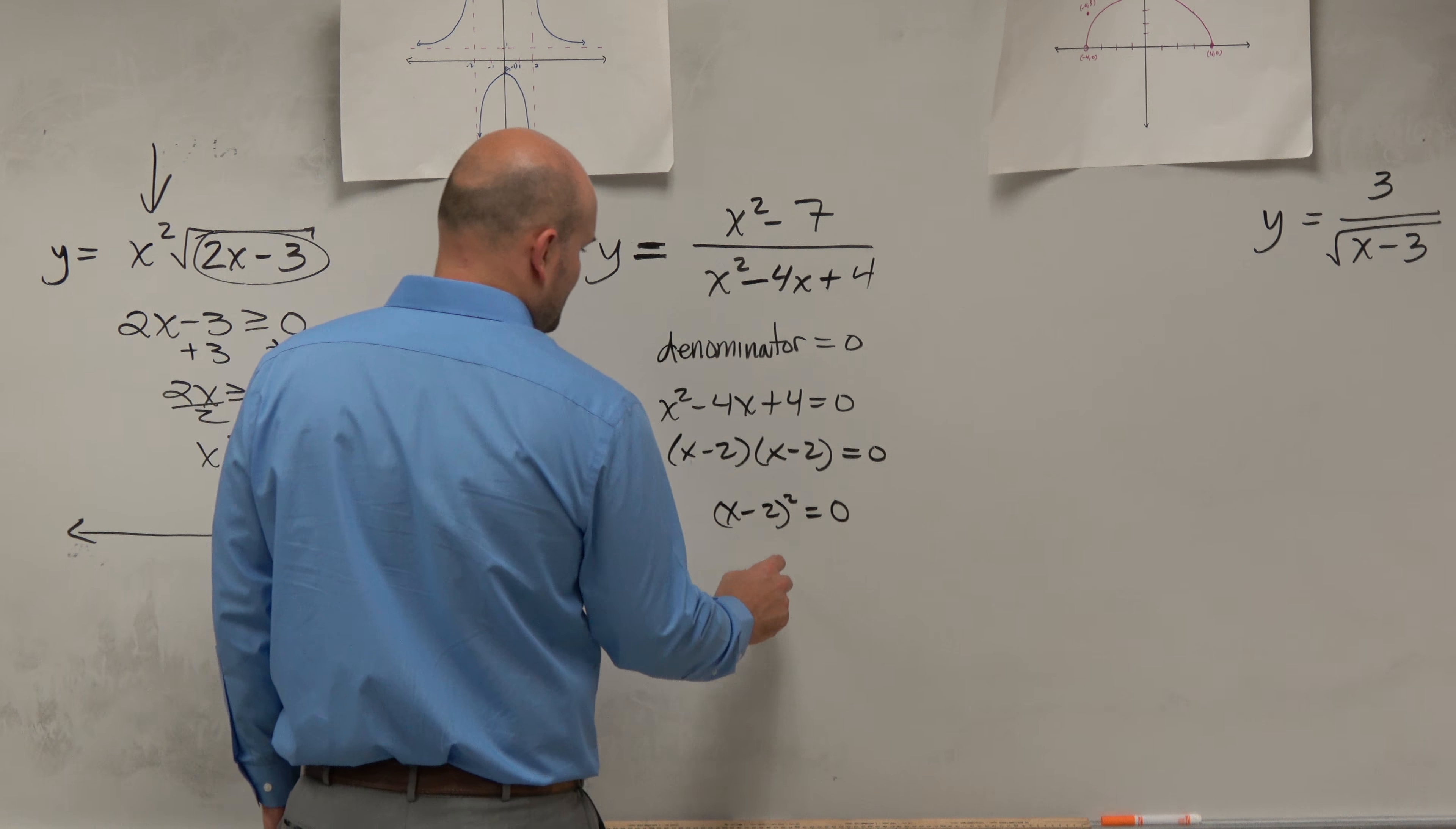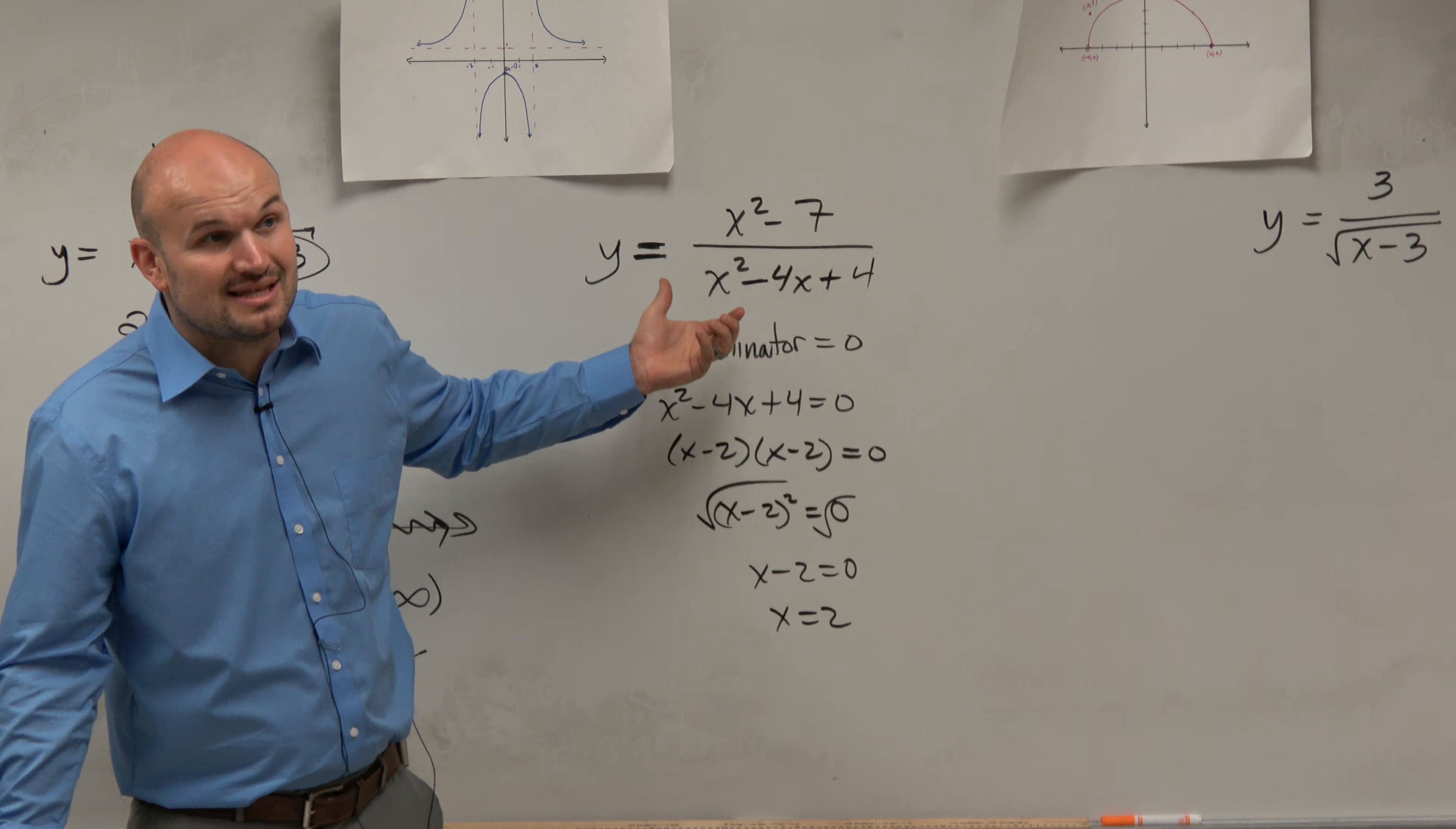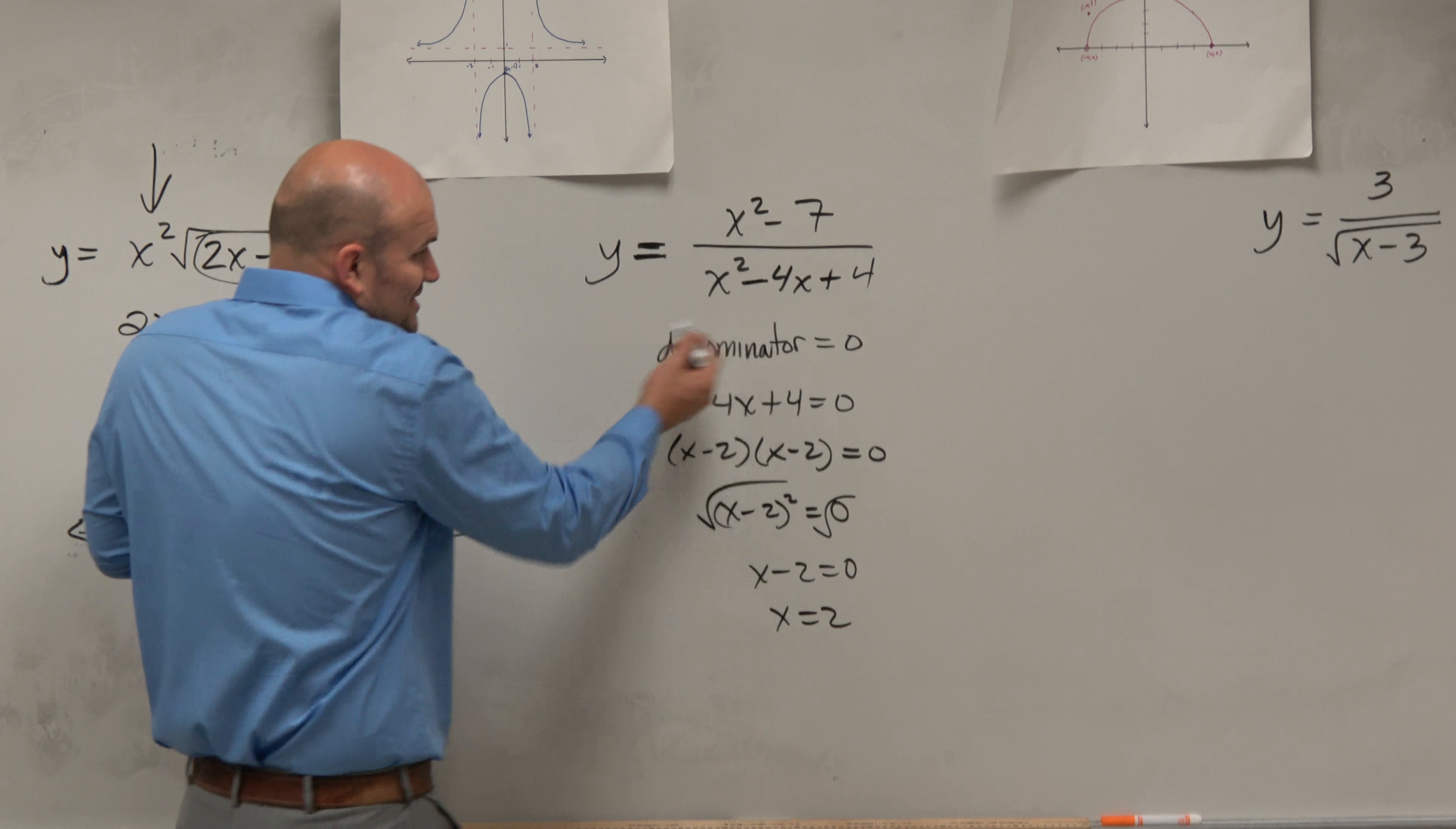We get one answer here, one solution of 2. And again, we verify: does 2 make the denominator equal to zero? Yes, it does. Is that the only number that's going to make the denominator zero? No, you got another one? I'll take them. What else? Oh yeah, right. You just solved this, right?